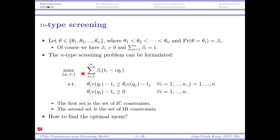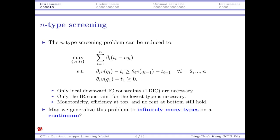In the n-type formulation, this is the expected profit given that all types choose their intended contract. The IC constraint says that a type-i consumer prefers choosing contract i over any other contract j — we need this for all i and all j. The IR constraint ensures all types are willing to participate. We can find the optimal menu: the answer is yes.